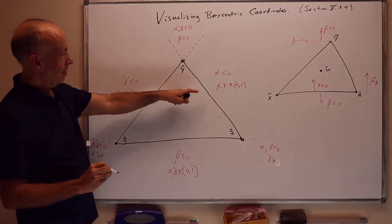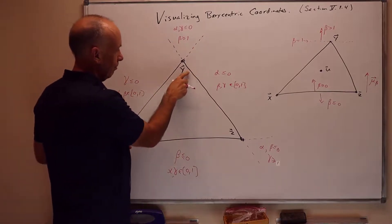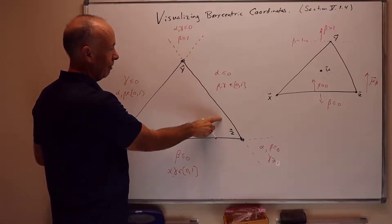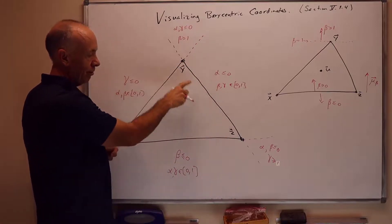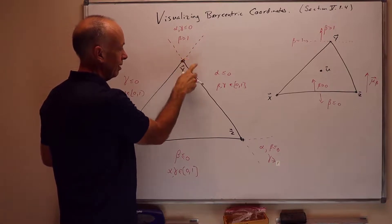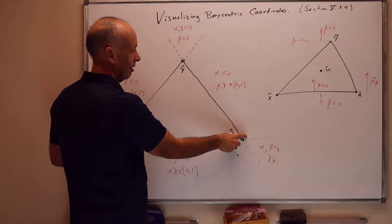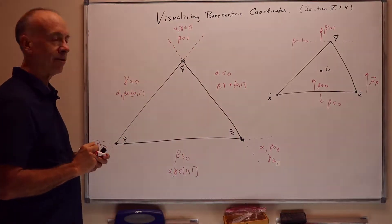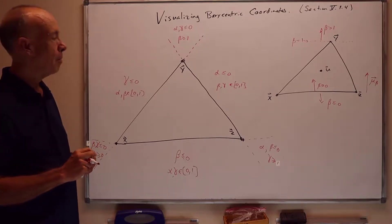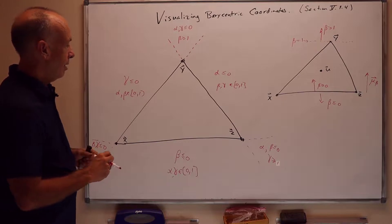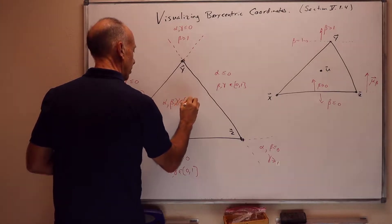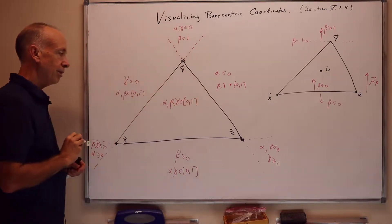To understand this last part — for instance, let's look at beta and gamma both being in the interval [0, 1]. If we were on the line yz with alpha equal to zero, beta and gamma would just control LERPing along that line. LERPing along that line starts with beta equals one at y and gamma equals one at z. Remember, alpha equals zero, so beta plus gamma equals one, because alpha plus beta plus gamma equals one. In the region inside the triangle, alpha, beta, and gamma are all in the interval [0, 1] because the point lies inside the triangle.